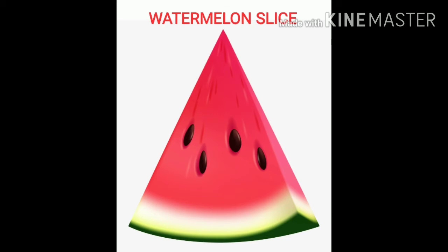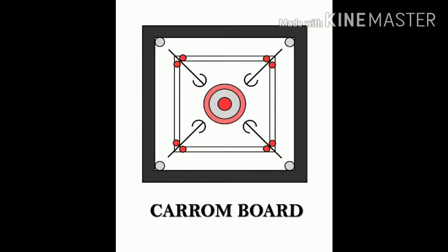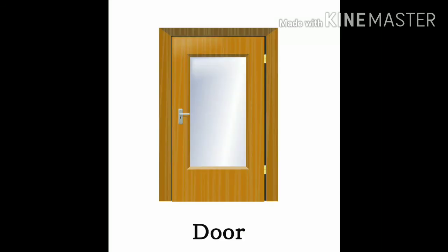Square. Square shape object is carom board. Rectangle. Rectangle shape object is door.